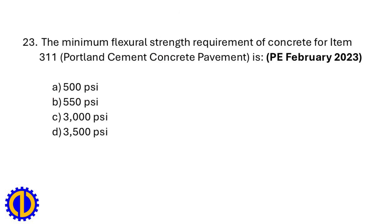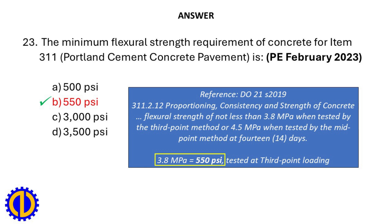The minimum flexural strength requirement of concrete for Item 311 Portland Cement Concrete Pavement is: a. 500 psi, b. 550 psi, c. 3000 psi, d. 3500 psi. Answer: b. 550 psi. Reference: DO 189, 2019 — flexural strength of not less than 3.8 MPa when tested by the third-point method, or 4.5 MPa when tested by the midpoint method at 14 days. 3.8 MPa equals 550 psi.